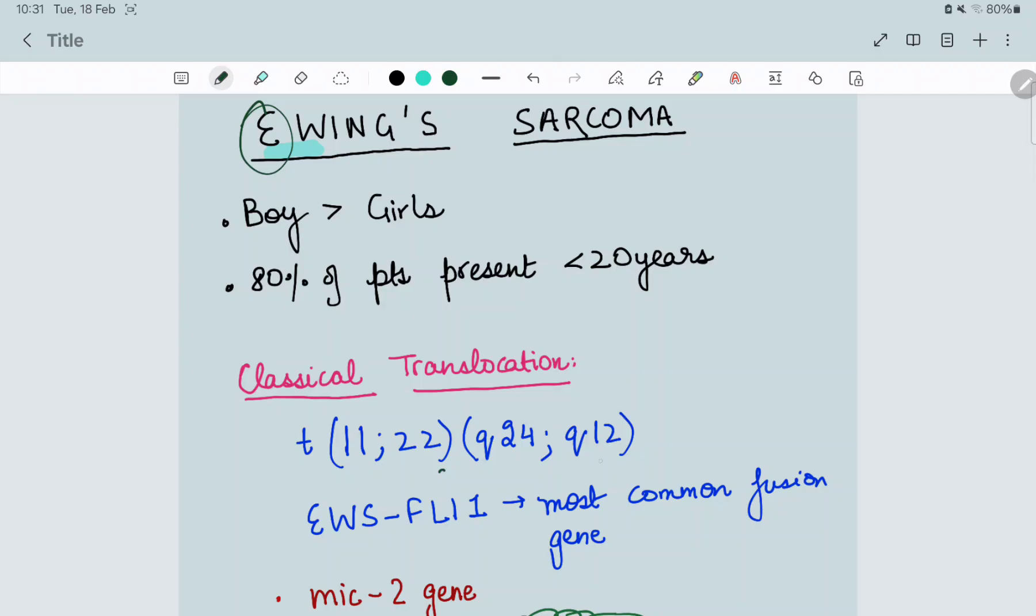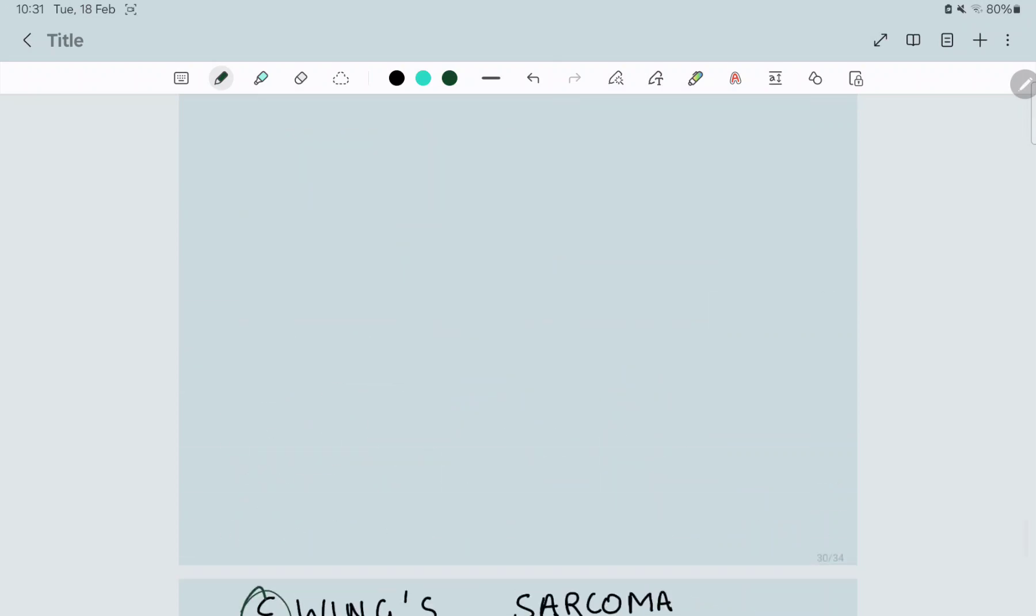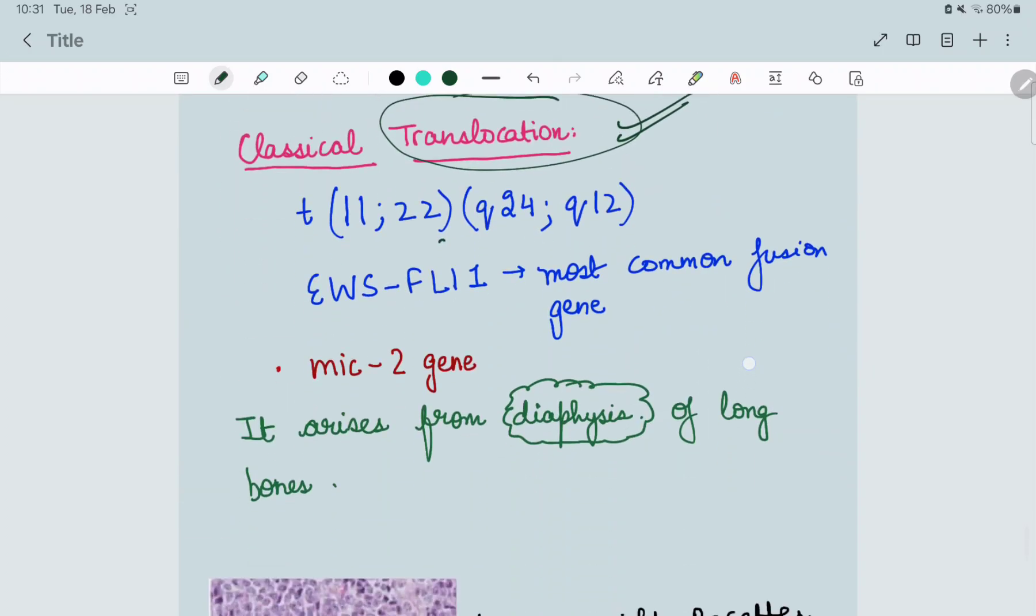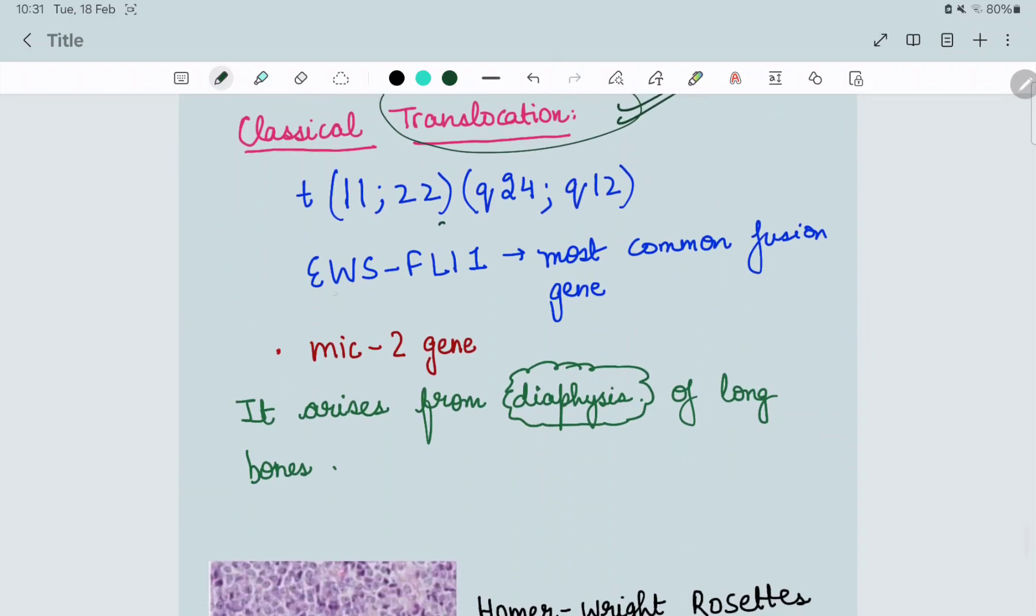It is translocation, first important, not deletion. Everyone knows 11;22, but they don't remember. Seeing this 11, you all will try to mark 11q deletion, but it is never deletion. The answer here is A, 11q translocation, not deletion.